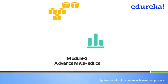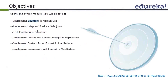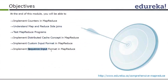In this session on Advanced MapReduce, everything will be Java-based. We are going to implement counters in MapReduce and see how to create custom counters. There are two types of joins: a map-side join and a reduce-side join. We will also cover how to test MapReduce programs, how to implement distributed cache, and how to create a custom input format and sequence input format.